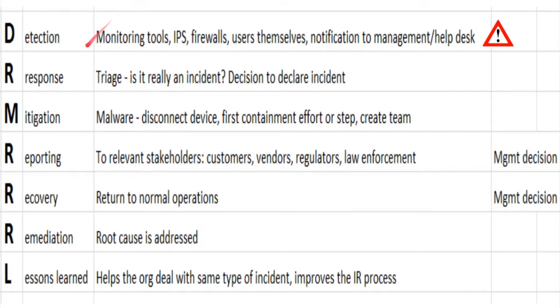The next is R for response. This is where some type of triage occurs, and where analysts and management try to figure out whether it's really an incident. This is where the formal declaration process happens.